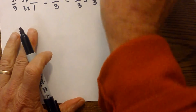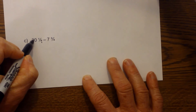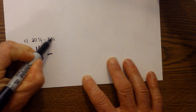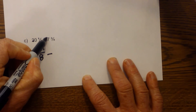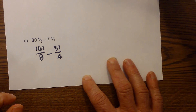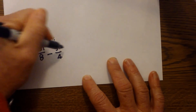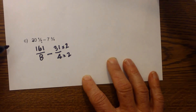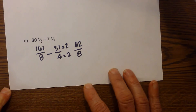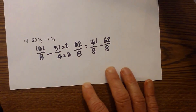You'll notice numbers get a little large when you convert to an improper fraction. For twenty and one-eighth minus seven and three-fourths: eight times twenty is one hundred sixty plus one is one hundred sixty-one over eight. Four times seven is twenty-eight plus three is thirty-one over four. The common denominator is eight, so thirty-one times two is sixty-two over eight. So we have one hundred sixty-one over eight minus sixty-two over eight.